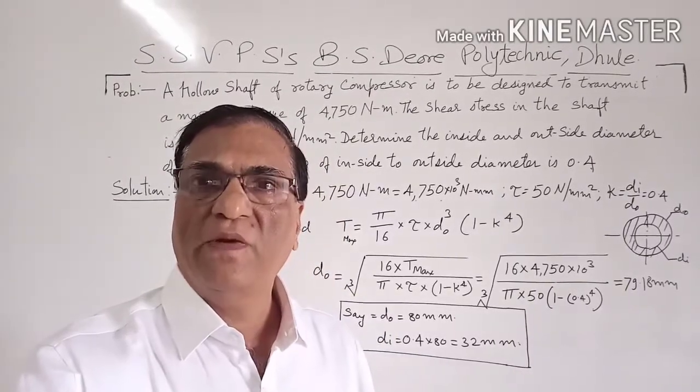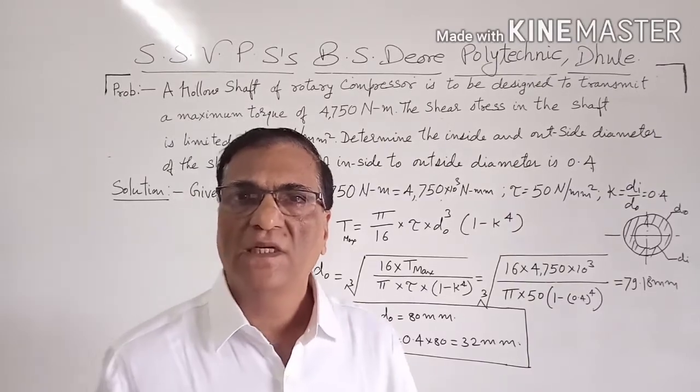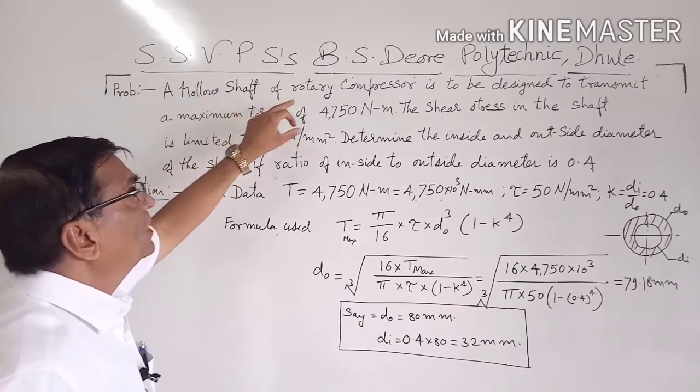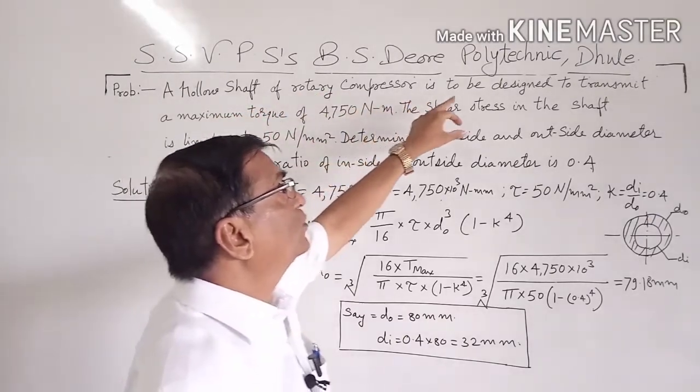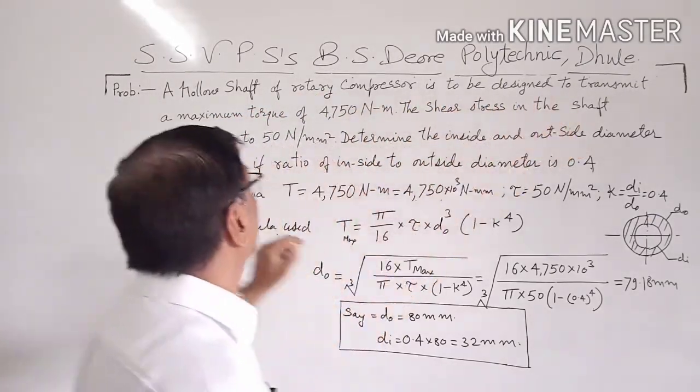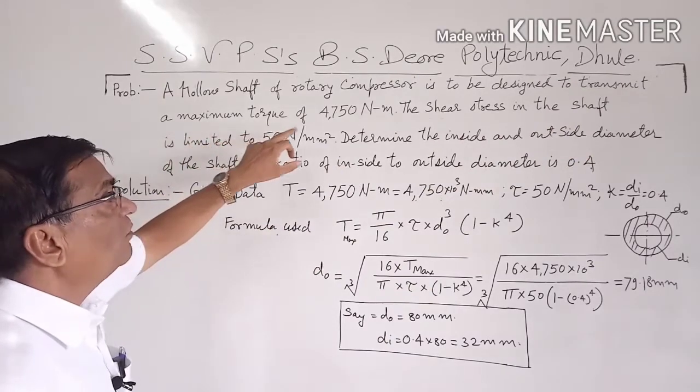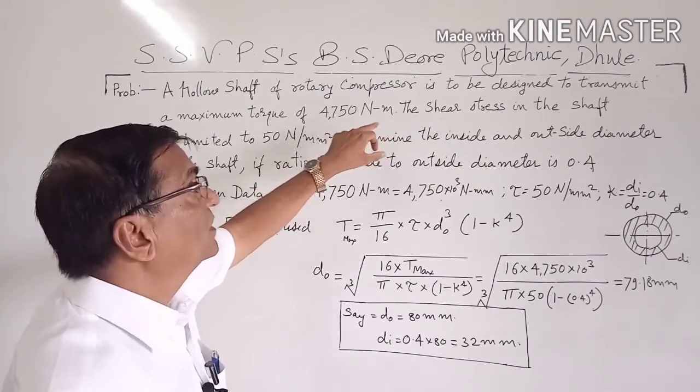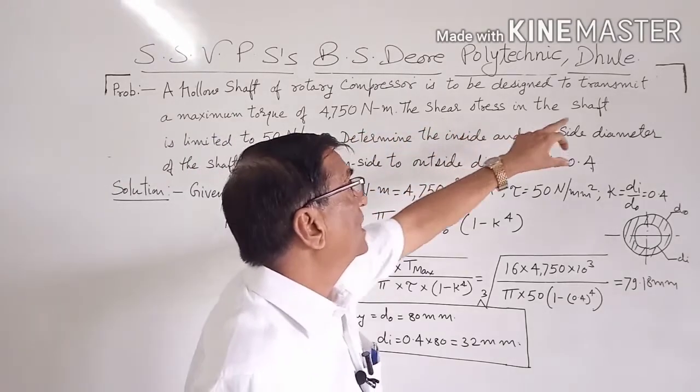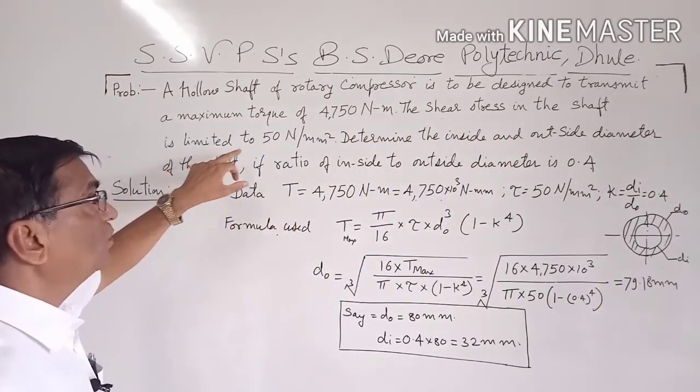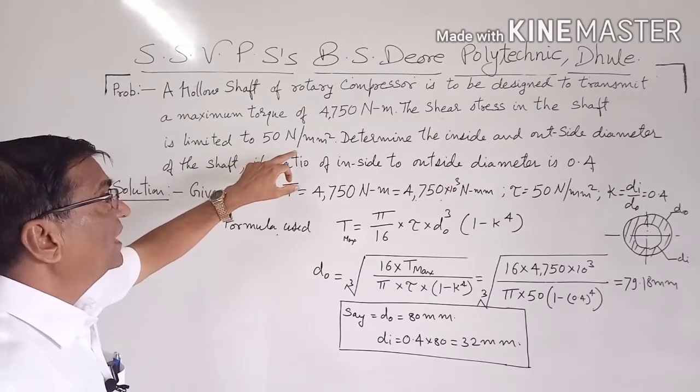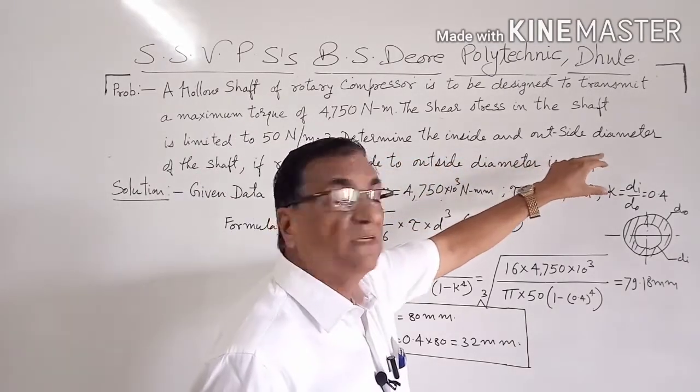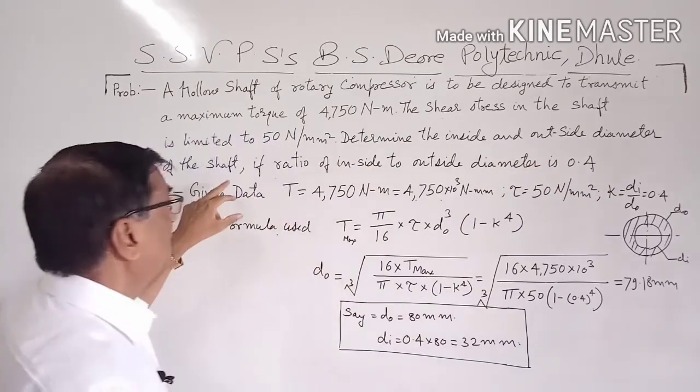A hollow shaft of a rotary compressor is to be designed to transmit a maximum torque of 4750 Newton-meters. The shear stress in the shaft is limited to 50 Newtons per millimeter squared. Determine the inside and outside diameter of the shaft.